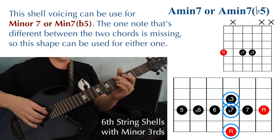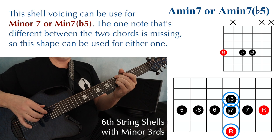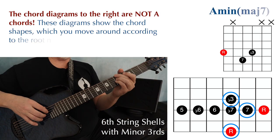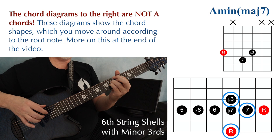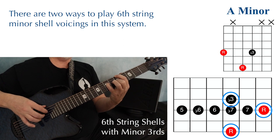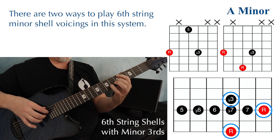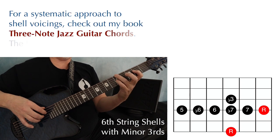Moving the fourth string note to a flat seven gives a minor seven chord. Just like the fifth string shell voicing, you can play this minor seven shell voicing in place of a minor seven flat five or half diminished chord. Moving that fourth string note one fret higher gives an A minor major seven. Moving it again gives another A minor chord — this time with two roots and a flat three on top.